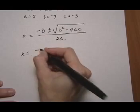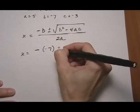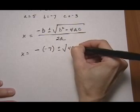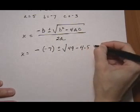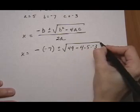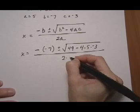X equals minus b, b is a negative 7, plus or minus the square root of b squared, 7 squared is 49, minus 4 times a is 5, c is negative 3, everything over 2 times a, which is 2 times 5.